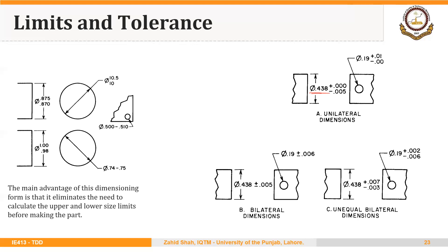There are different ways to show this allowed variation in the size of a part. What is shown here is unilateral tolerance. There is no variation allowed on the upper side of the basic size, but there is some variation allowed towards the lower side. So 0.438 plus 0.000 means the upper limit is 0.438 and the lower limit is 0.433. We cannot make this part greater than 0.438 or smaller than 0.433.